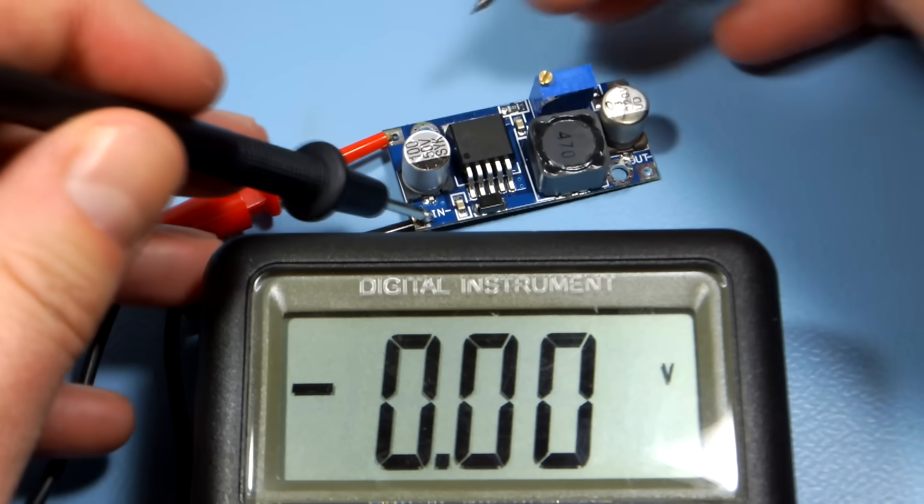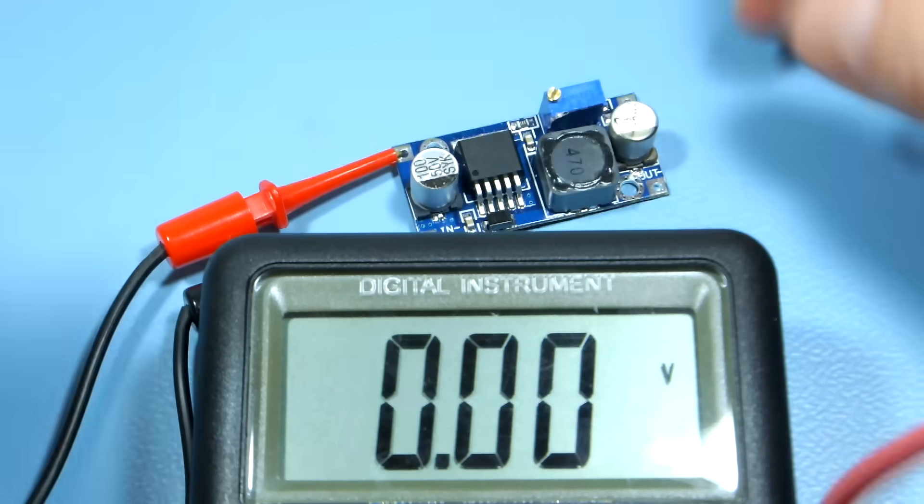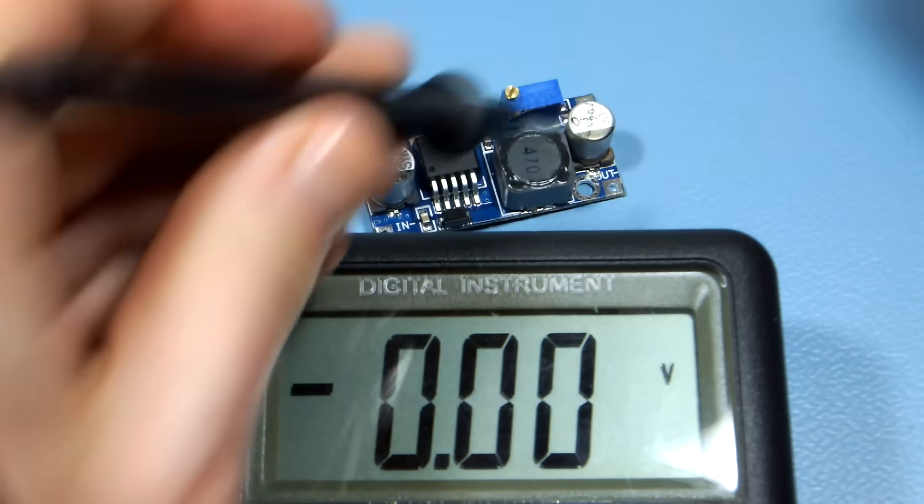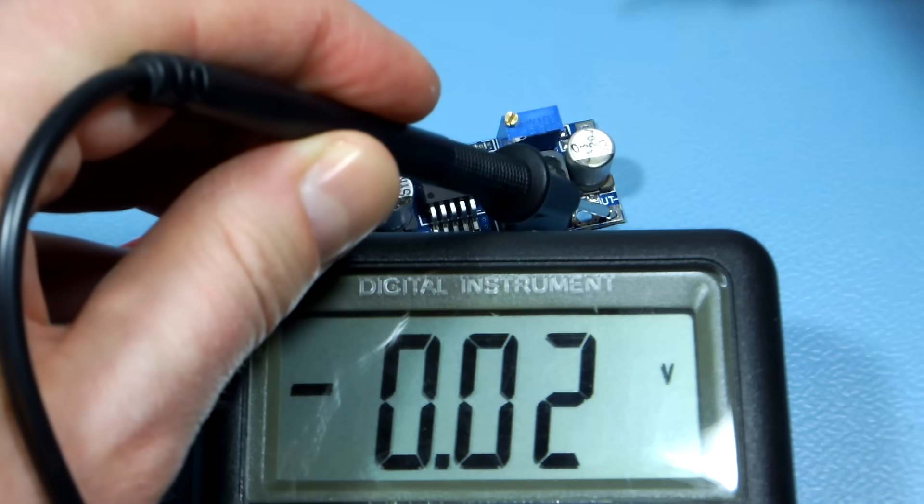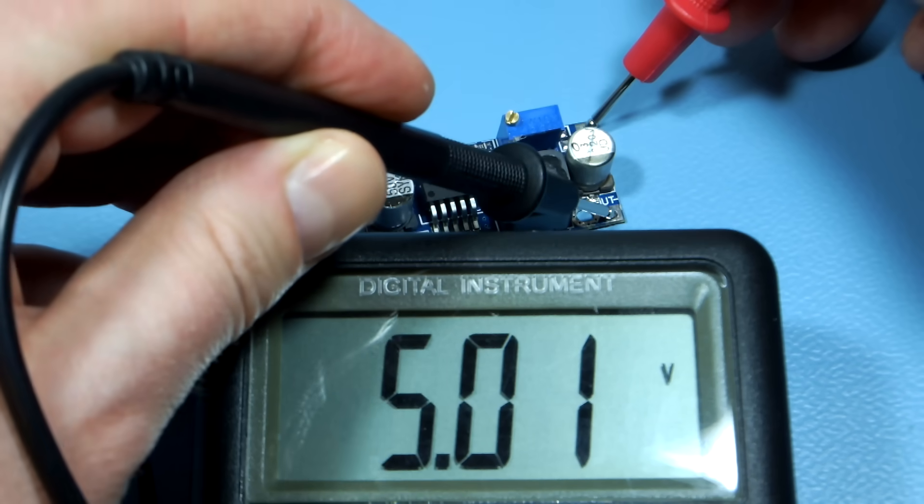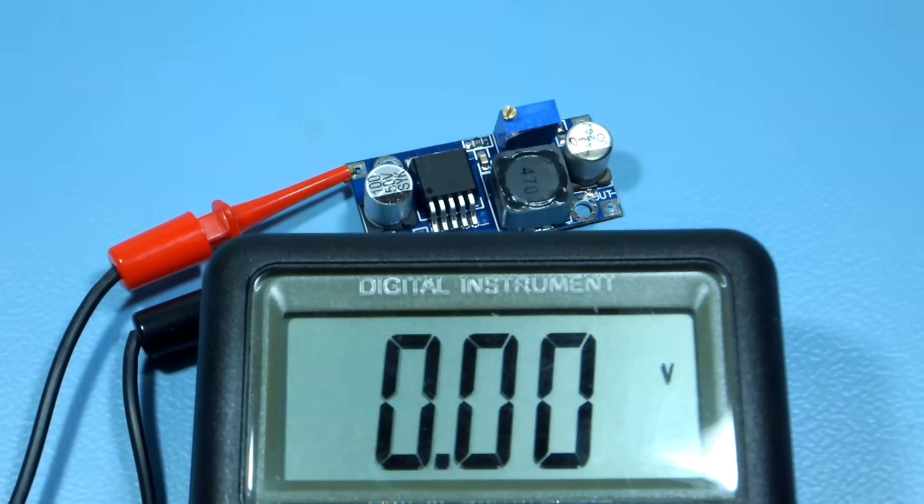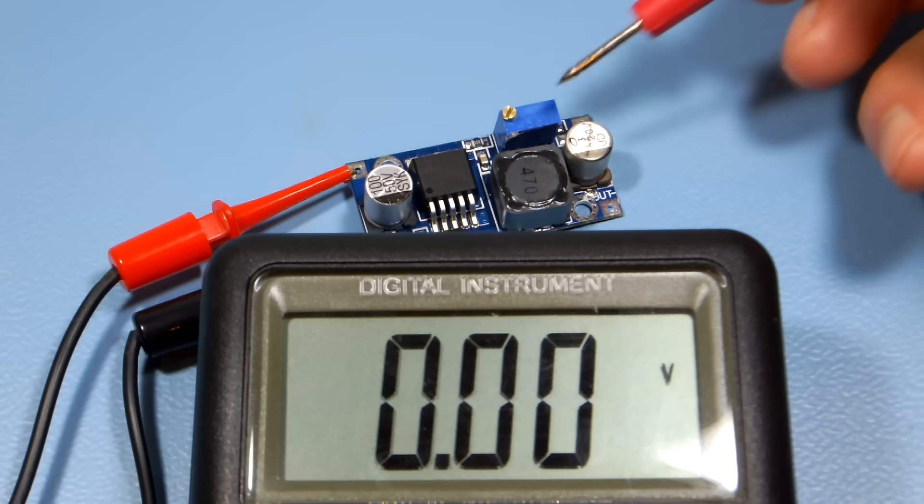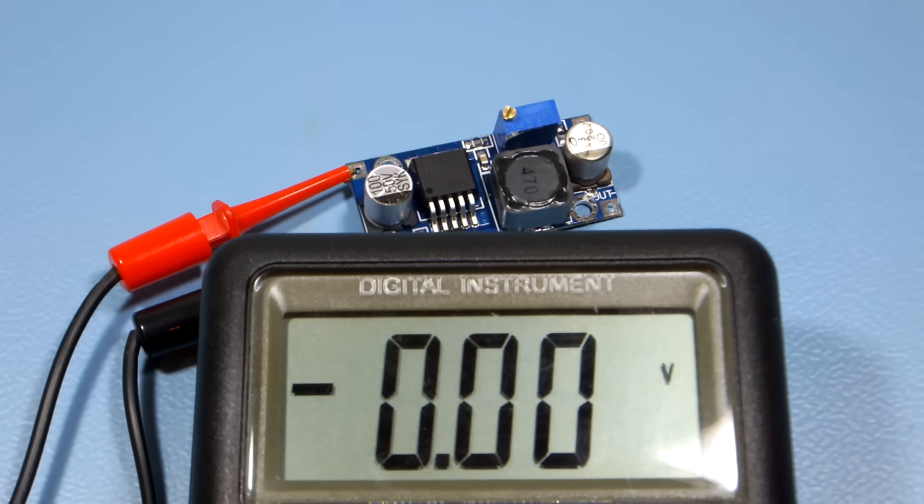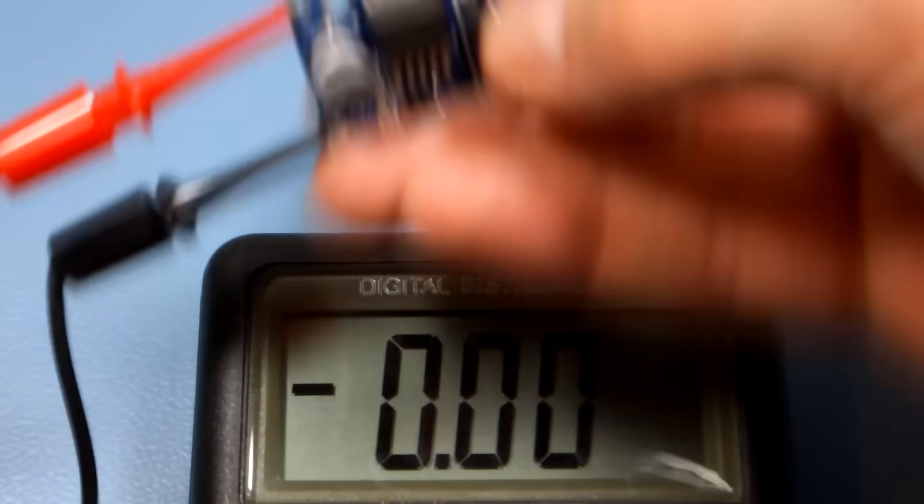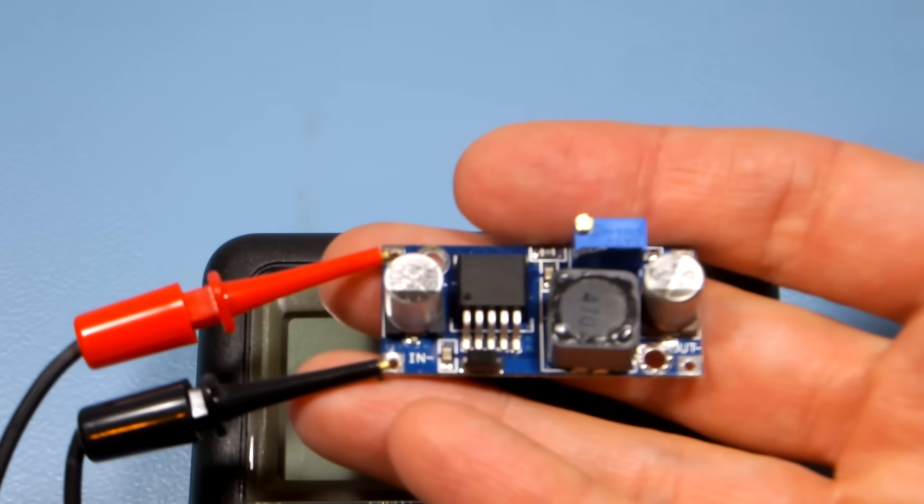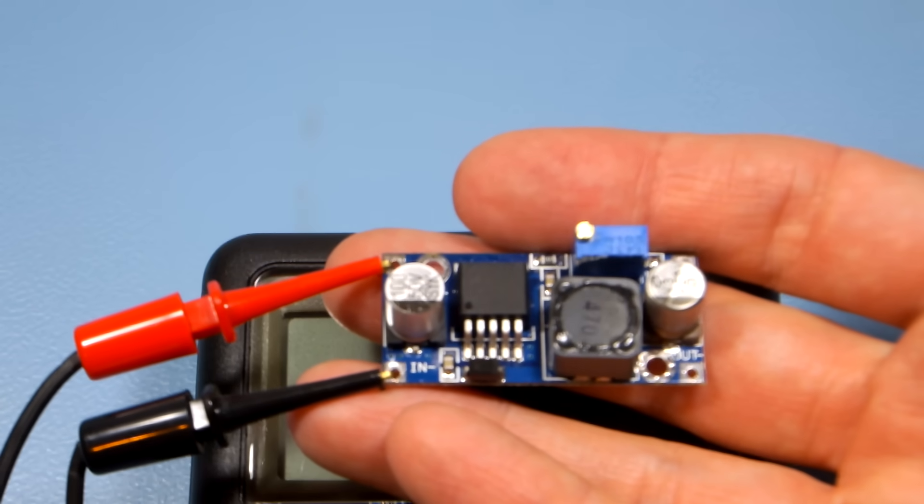You feed those two pads with DC voltage and you get constant lower voltage here. The output voltage is adjusted by this potentiometer. For example, you can set it to 5V and this little guy becomes a very efficient 5V voltage regulator.